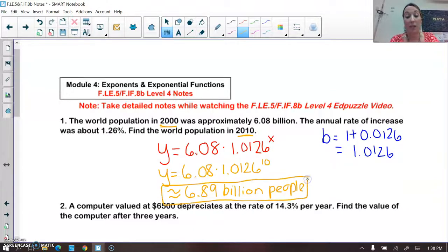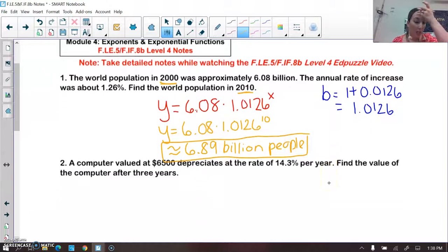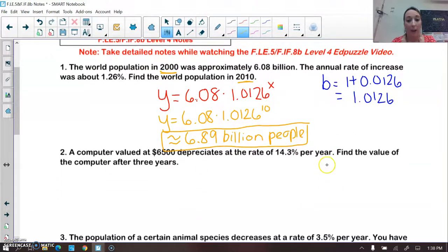Okay, moving on to the next question. A computer valued at 6,500 depreciates at a rate of 14.3% per year. So let's first write this exponential decay.